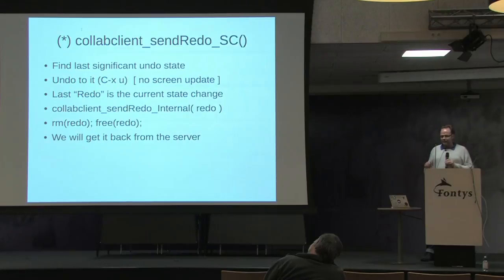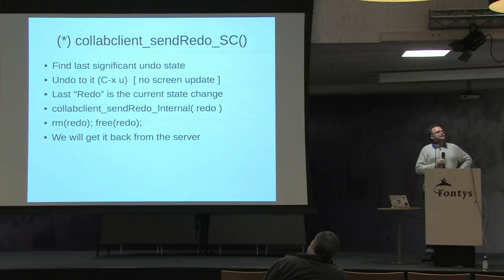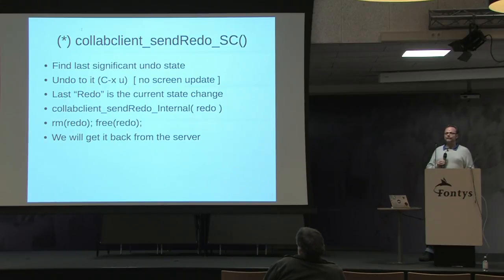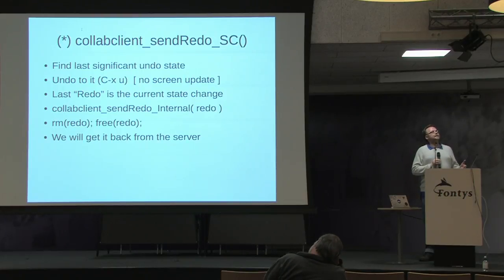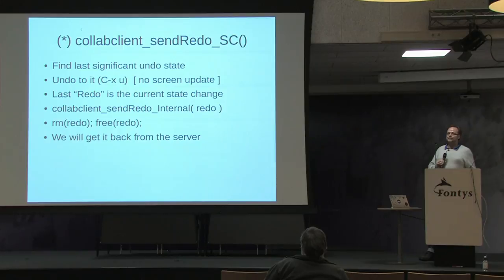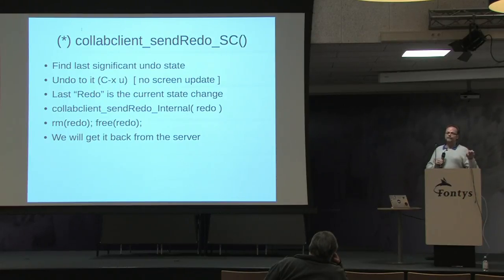This slide with the asterisk is the core of the talk. When sending out changes, after an undo state has been saved the user has made further changes. You undo to where you are, which pushes the current state onto the redo stack — that's a way of capturing the current dirty state you want to send to other clients. You then call a function to send that redo out, and on your local stack you remove and delete that redo. You're now back to the point before the user's changes, but you've sent those changes over the wire to the server.